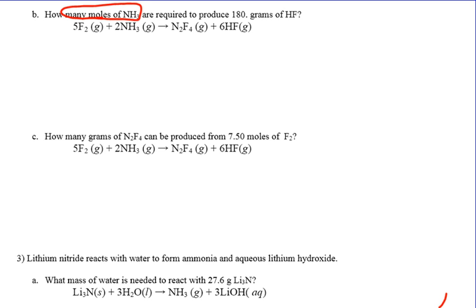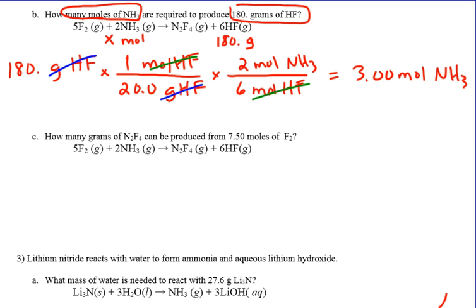Problem 2B: How many moles of NH3 are required to produce 180 grams of HF? You are given 180 grams of HF and asked to find moles of NH3. Starting with grams, the problem starts like a gram-gram stoichiometry problem: first convert grams of HF to moles of HF, then use the mole ratio from the balanced equation. You do not need step 3 — converting moles back to grams — because the answer asked for is moles of NH3. The answer is 3.00 moles of NH3.